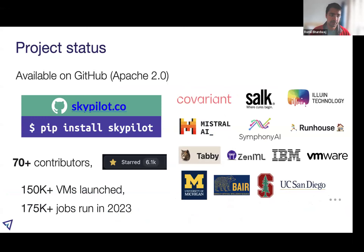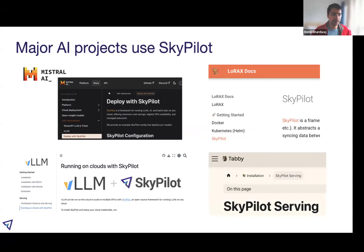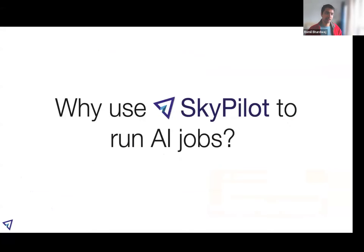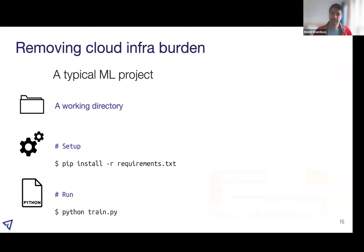Before we dive deeper, here's a quick overview of the project. It's open source on GitHub. Some of our biggest users are startups that use SkyPilot to quickly deploy their AI training and serving workloads on different clouds. Some major AI projects use SkyPilot to distribute their models — for example, if you go to Mistral's docs, one of the recommended ways of running on the cloud is through SkyPilot. Similarly, vLLM, which is a very popular inference engine, also recommends using SkyPilot to run on the clouds.